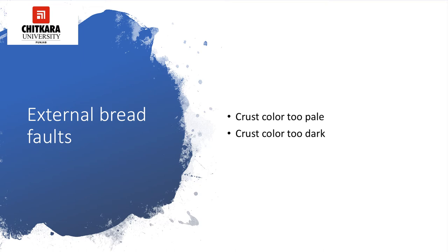The causes for crust color to be too dark include: using too much sugar, milk, egg, fat or salt, too low dough temperature, very high oven temperature, lack of humidity in the oven, too long baking time, and/or too young dough — that is, under fermented or over mixed dough.